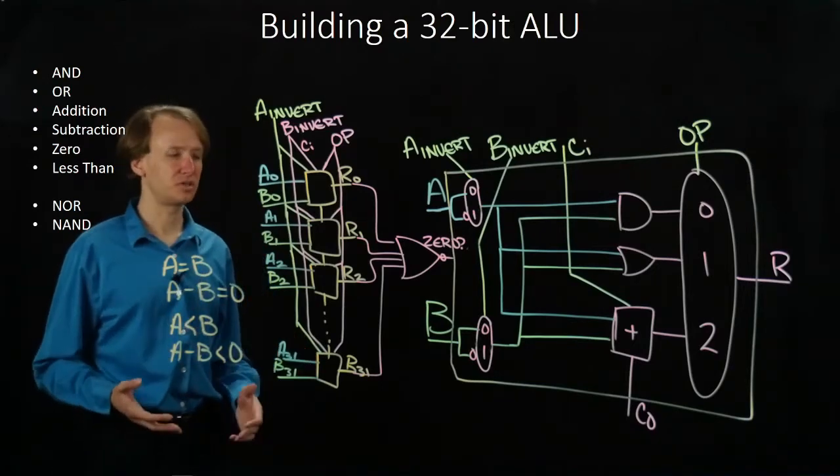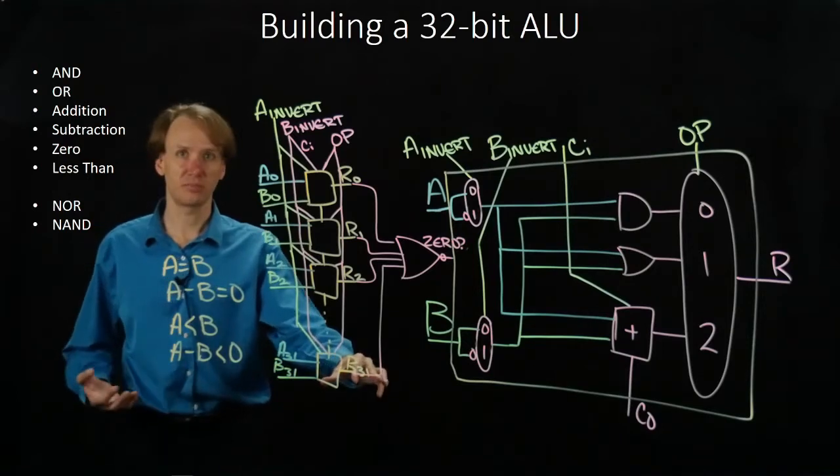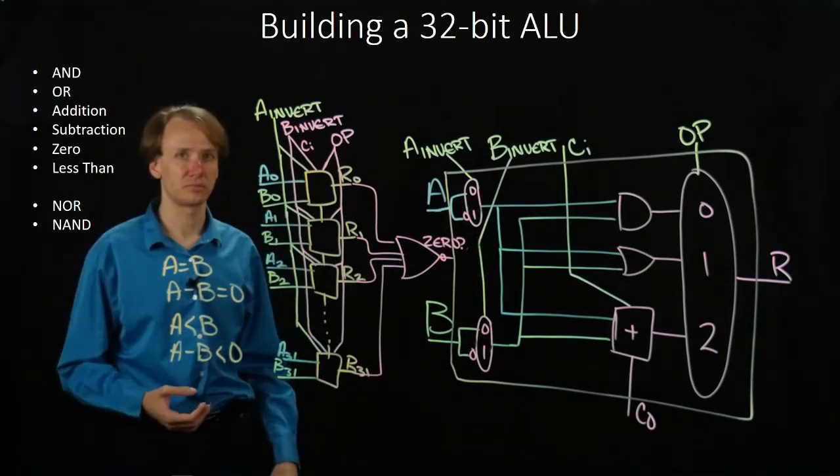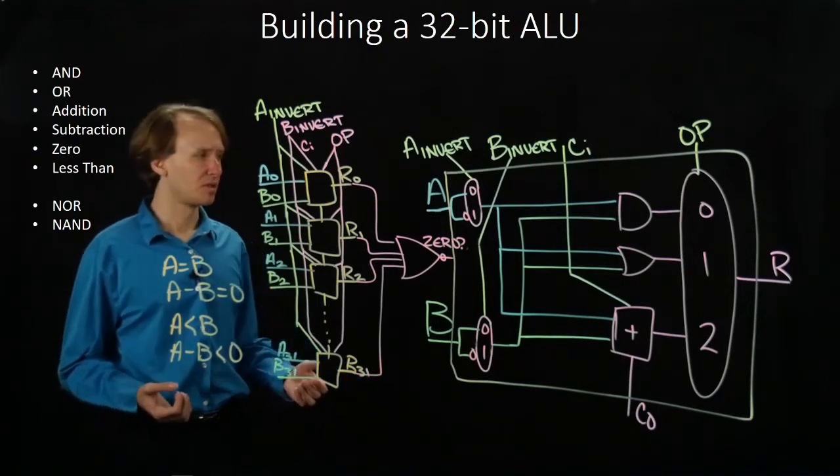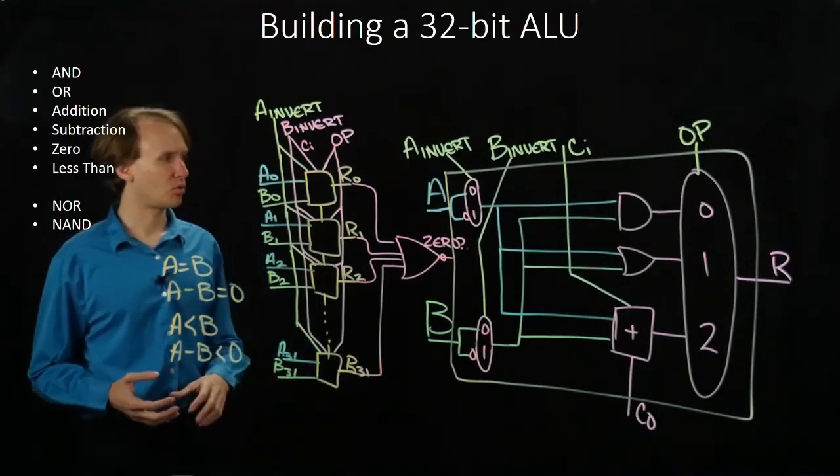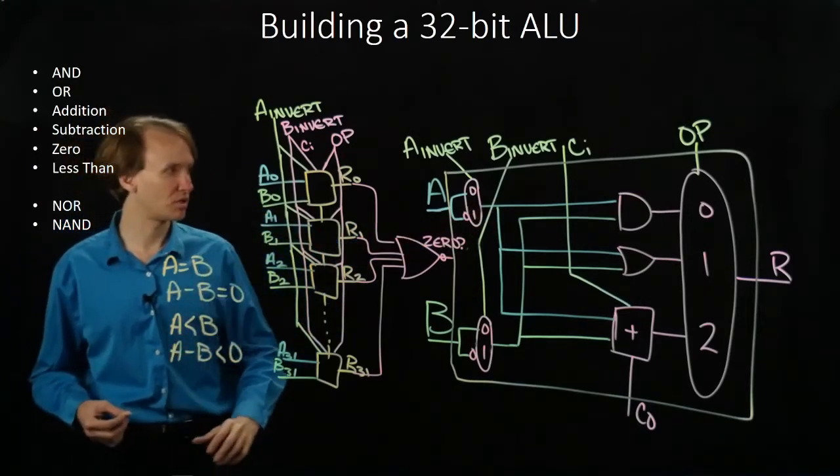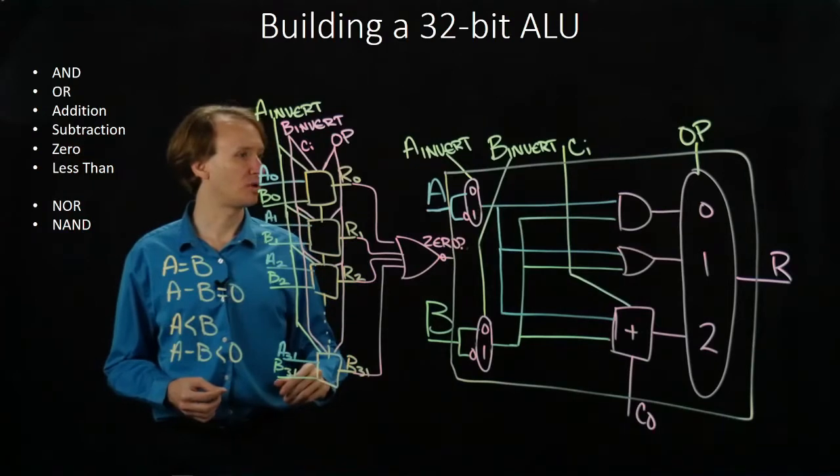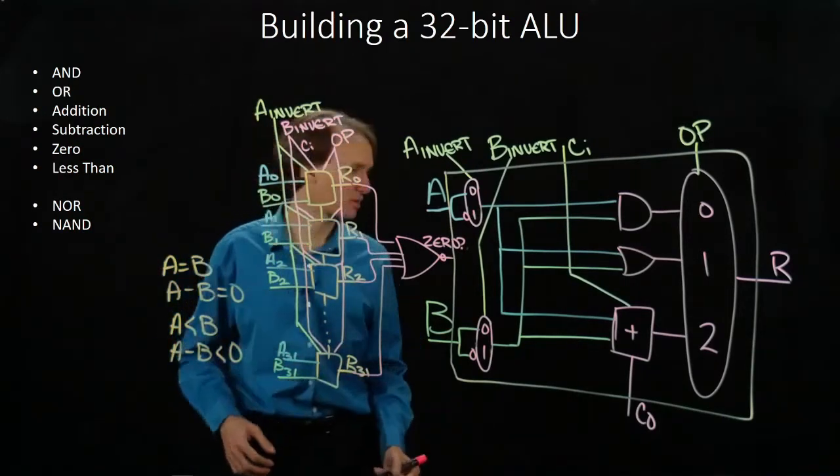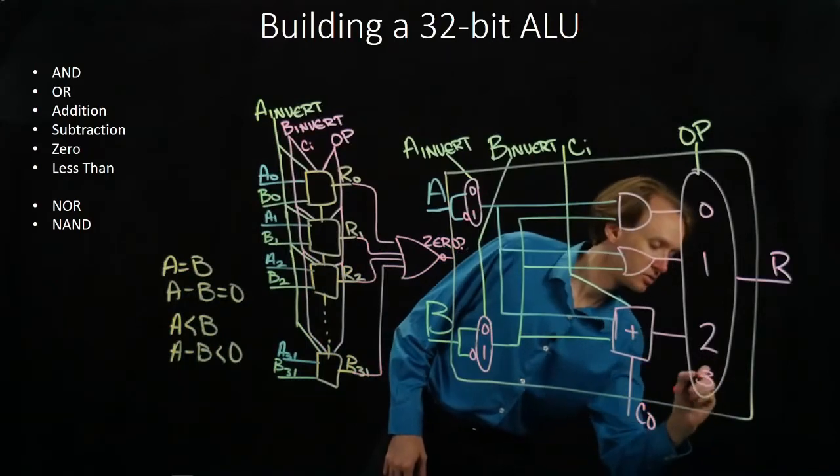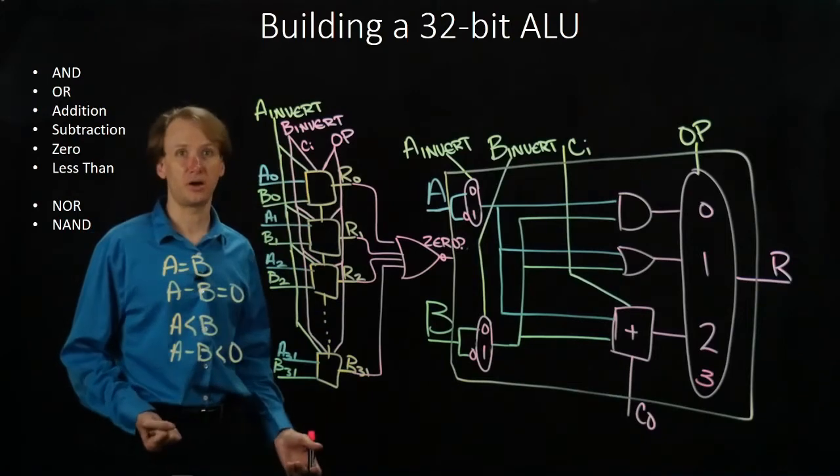There's a few ways we could do this. We could do something similar to the zero line where we just take this one bit and send it out. Say that's the less than line. But in our case, what we're going to do is actually extend our hardware a little bit. We'll give our one-bit ALU one more operation that it can do. We'll have an operation number three down there. And this will be the less than operation.